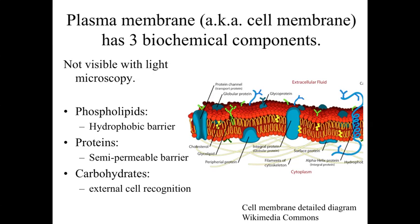If we take a look at how the membrane is essentially composed — the biochemical components associated with it — we're going to have phospholipids, which are present for the formation of a hydrophobic barrier. We're going to have proteins, which contribute most of the function associated with the membrane, most importantly contributing to the semi-permeable barrier properties. And then finally we're going to have carbohydrates — essentially a sugar-coated external surface — which is important for external cell recognition and interaction between the plasma membrane and surrounding cells and structures.